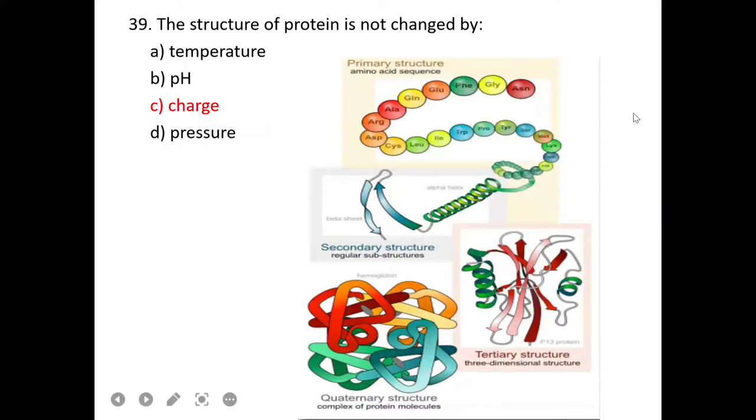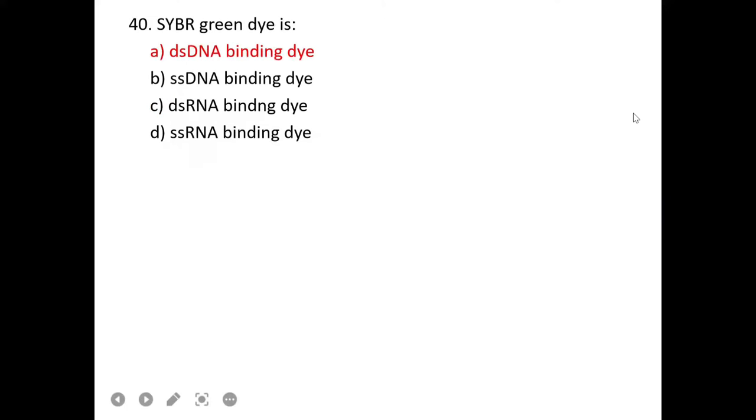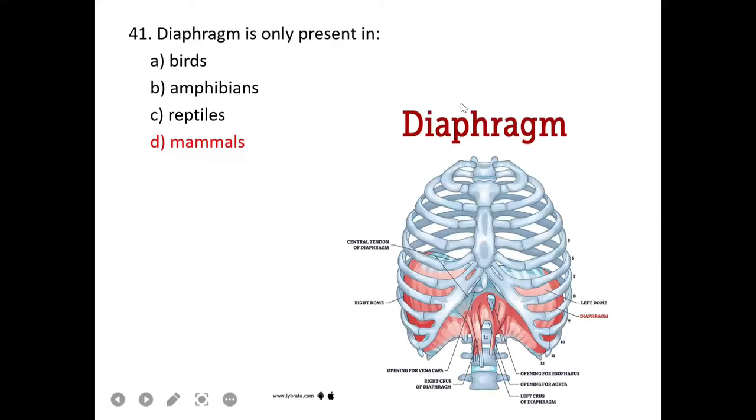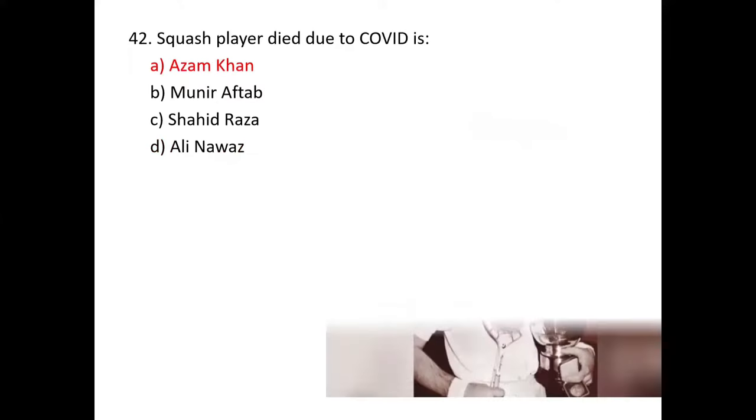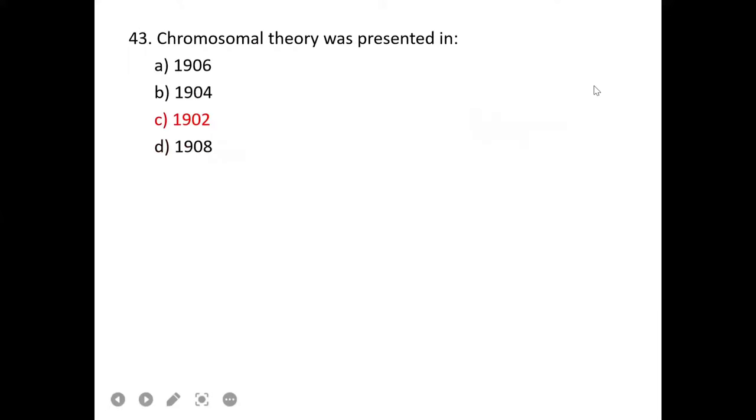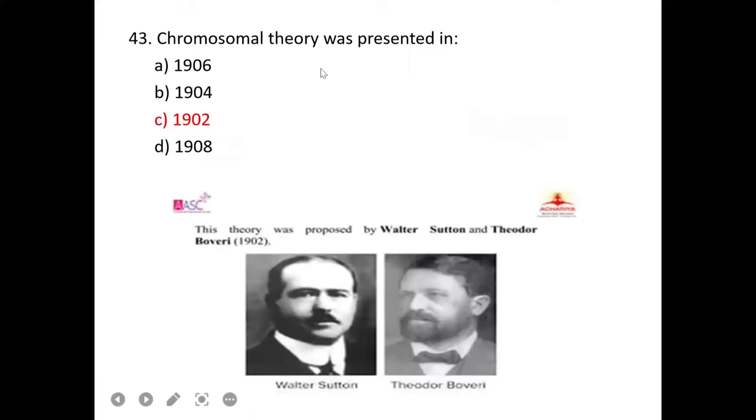The study of allele frequency is called population genetics. Hematopoietic stem cells are pluripotent. Pluripotent means they can form all types of blood cells and are not involved in organism formation, whereas totipotent cells can develop into a complete organism.